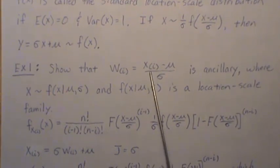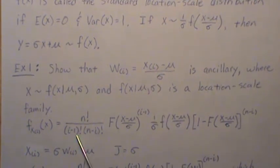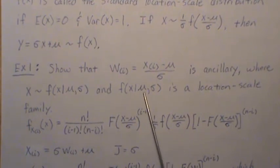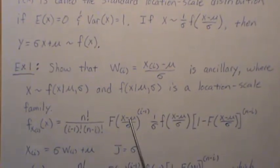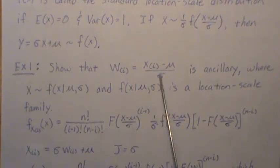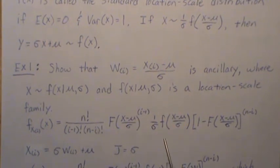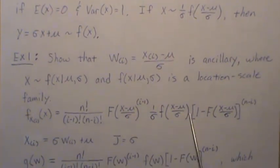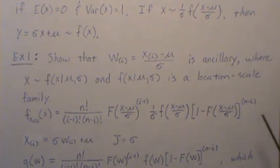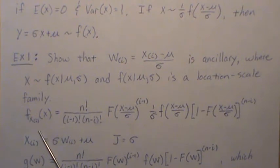So, the density for the i-th order statistic is this. Since this is a location scale family, the CDF is written like this, because you back solve for this, and that's the density, and this is the 1 minus the CDF. So, we're not going to cover order statistics in this video, but just tell you that this is the density for the i-th order statistic.